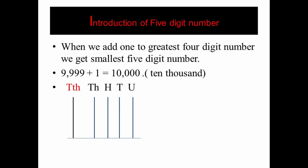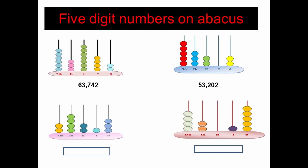Here are some examples of five digit numbers on the abacus. In the first example: ones place has two beads, tens place has four beads, hundreds place has seven beads, thousands place has three beads, and the ten thousands place has six beads. So the number is sixty three thousand seven hundred and forty two (63742).